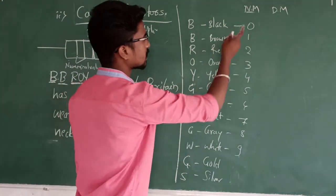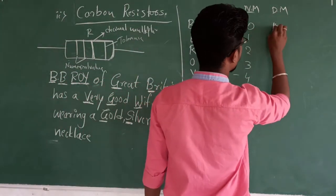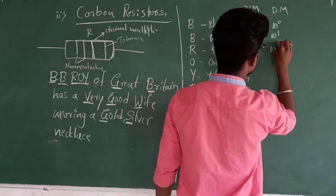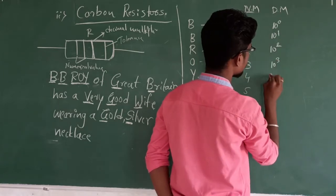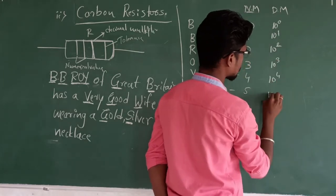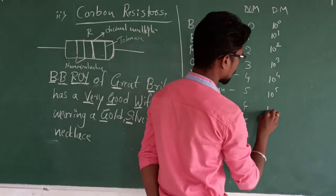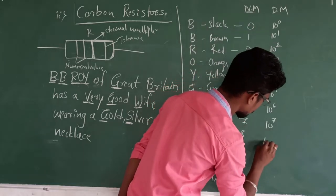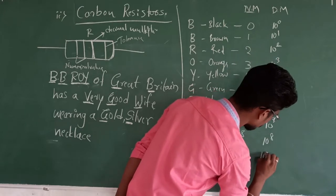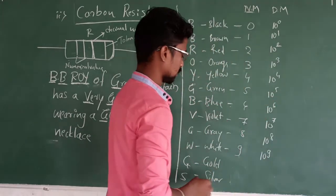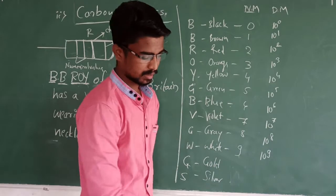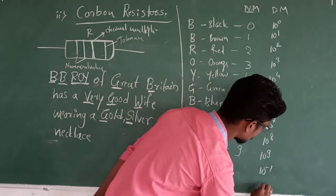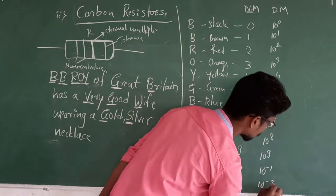The decimal multipliers are: Black = 10⁰, Brown = 10¹, Red = 10², Orange = 10³, Yellow = 10⁴, Green = 10⁵, Blue = 10⁶, Violet = 10⁷, Gray = 10⁸, White = 10⁹. For Gold it is 10⁻¹ and for Silver it is 10⁻².